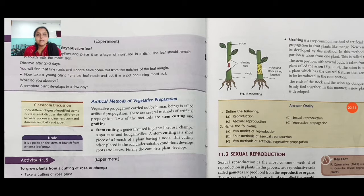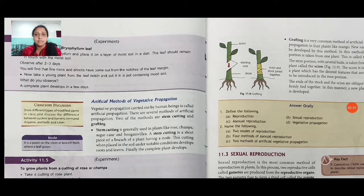Stem cutting is generally used in plants like rose, champa, sugarcane, etc. A stem cutting is a short piece of a branch of a plant having a node. When placed in the soil under suitable conditions, it develops roots and leaves, and finally the complete plant develops. They first cut the stem and put it in another place, and after a few days we get another plant.